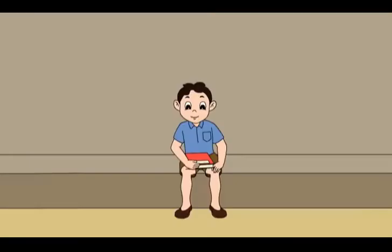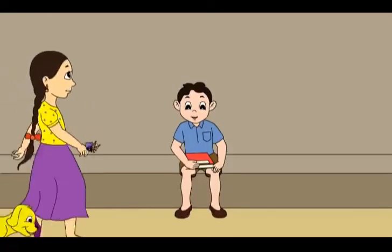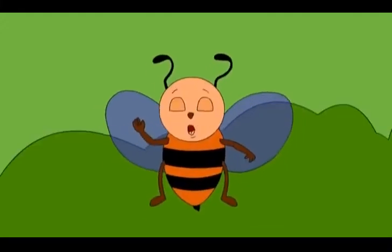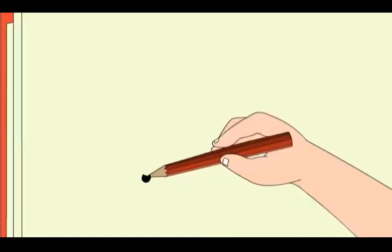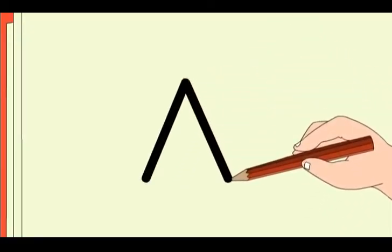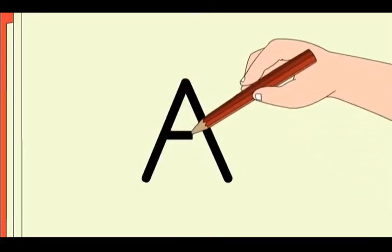Come, I will show you my notebook. We use many lines when we write. How? Look. This is A. There are two slanting lines and a sleeping line.